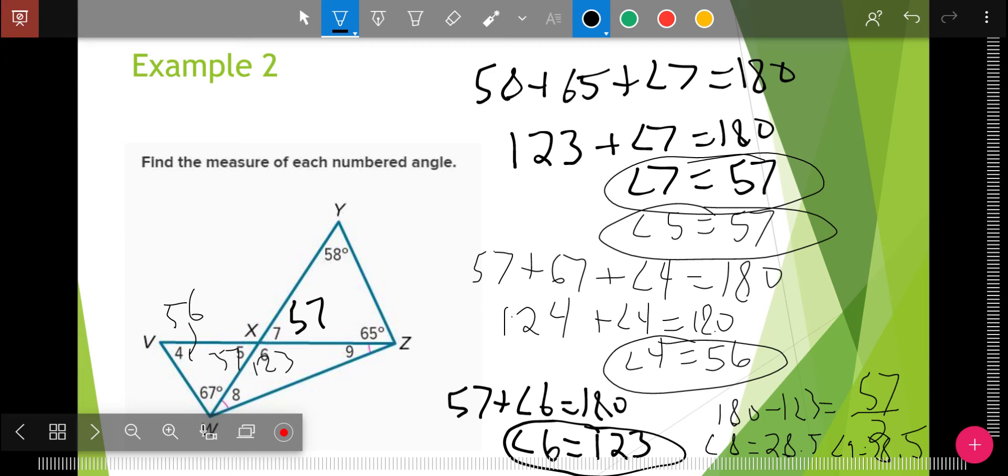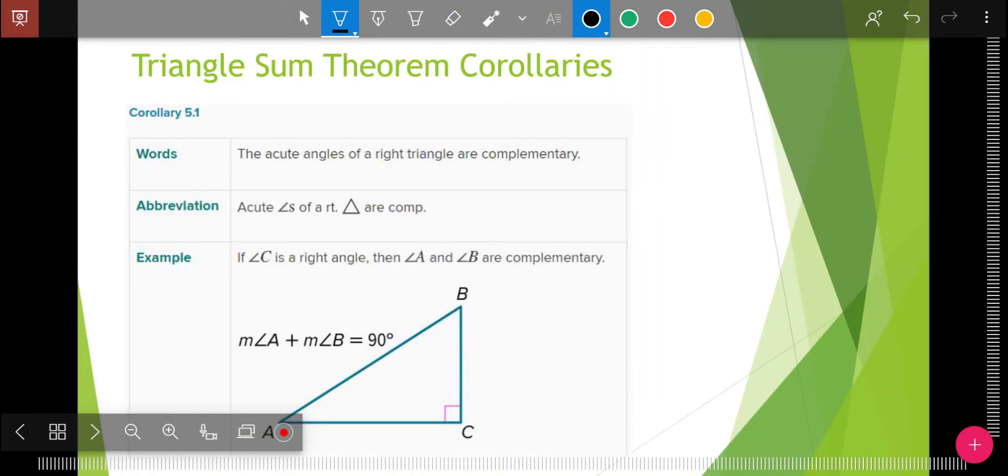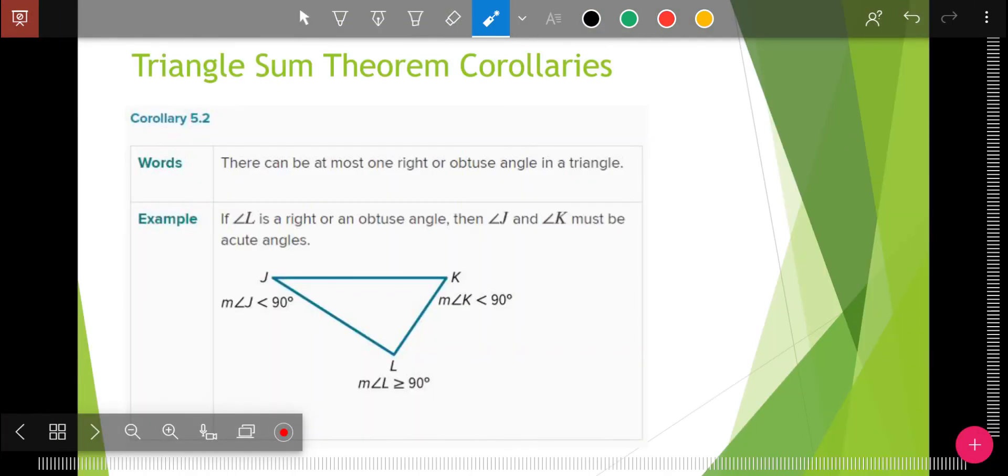Again, triangles add up to 180. Corollaries of that, if it adds up to 180 and one of the angles is 90, then the other two got to add up to 90 or they're complementary. Also, there can only be one angle that's a right angle or one angle that's an obtuse angle. Because two right angles would be 180 and you couldn't have a third one. You can't make a triangle. An obtuse angle and another obtuse angle will never close back together. So two obtuse angles can't make a triangle. So a triangle can only ever have one right or one obtuse.